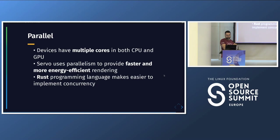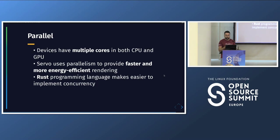Servo is parallel. Since the beginning, Servo has tried to use parallelism as much as possible, because modern devices have multiple cores on both CPU and GPU. Other web engines — for example — run the layout phase on a single core and can't take advantage of all cores. Servo tries to use parallelism as much as possible, and the Rust programming language makes that easier and safer.